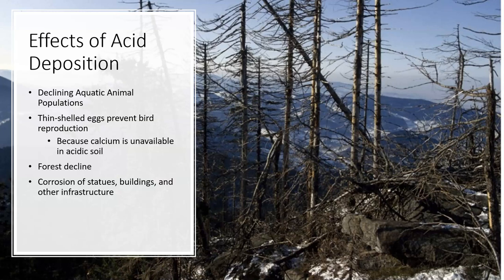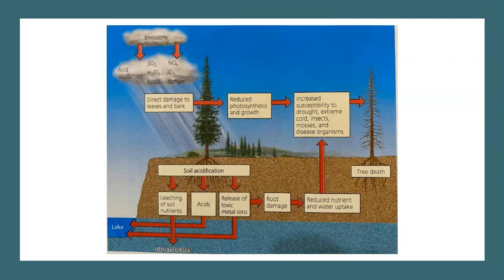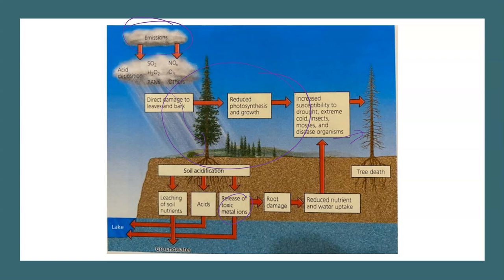Acid rain can also impact our infrastructure — more acidic water might more quickly erode concrete or cause corrosion of metal structures. To summarize: emissions in the form of sulfur and nitrogen oxides undergo reactions to form sulfuric acid, nitric acid, and similar compounds, which fall as precipitation, acidify the soil, impact plants causing forest decline, release toxic metal ions, and work their way into aquatic ecosystems causing all kinds of issues. That takes us to the end of this lecture.